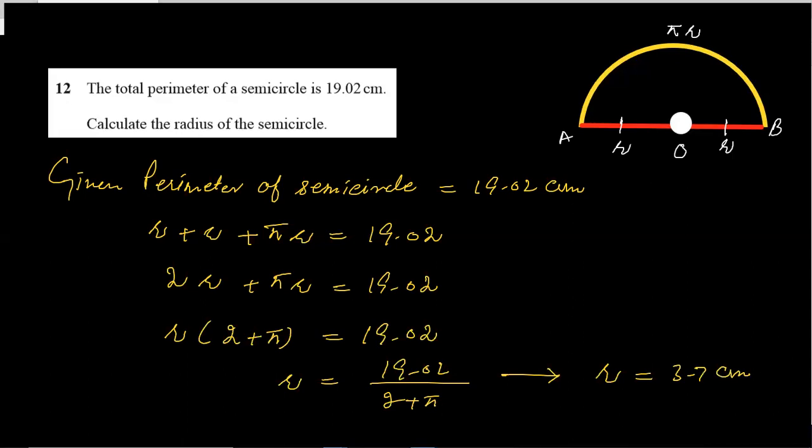And in this way, the radius of the semicircle is 3.7 centimeter, and that is the final answer of this problem. Hopefully you have understood this problem.